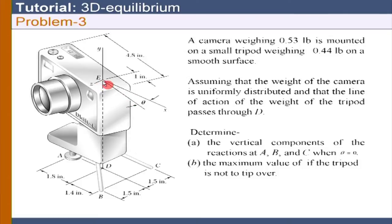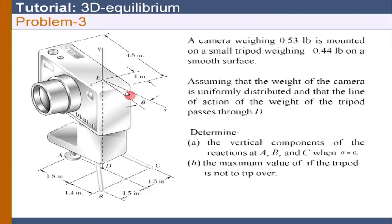We are rotating the camera by an angle theta. As you keep rotating, there will be a situation when the tripod will try to tip over. The question asks for the maximum value of theta for the tripod not to tip over. The first part is simply theta = 0, and the second part asks for the tipping condition — at what value of theta.